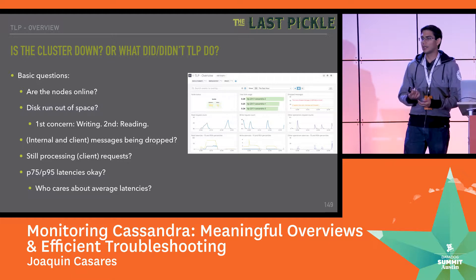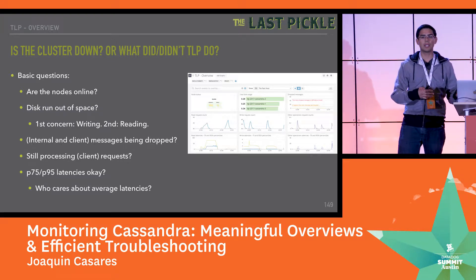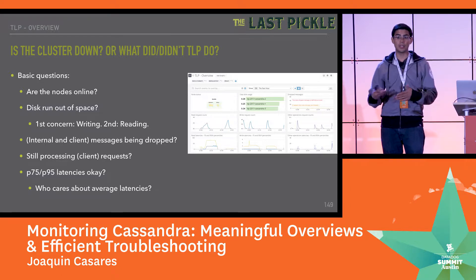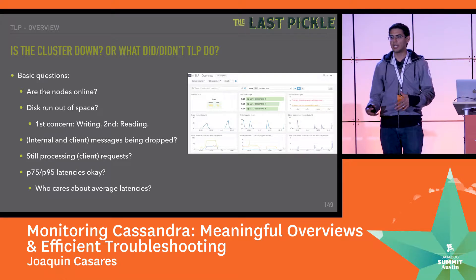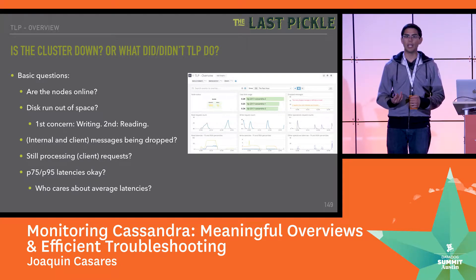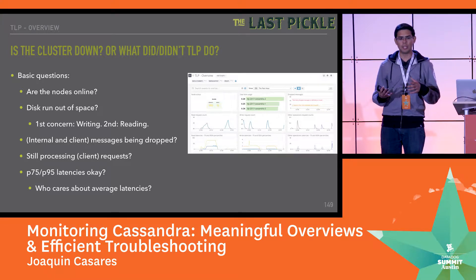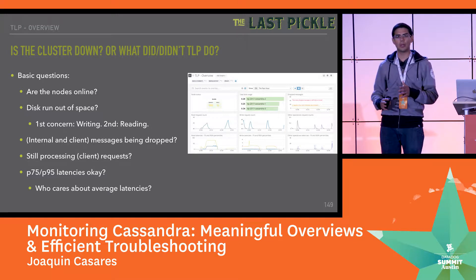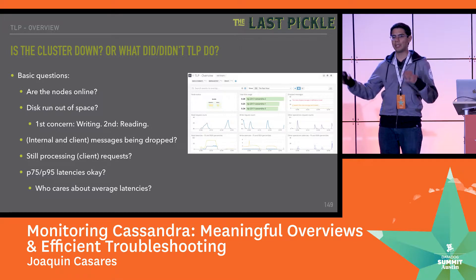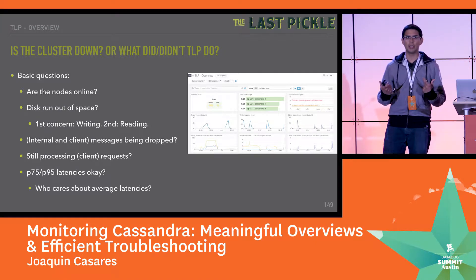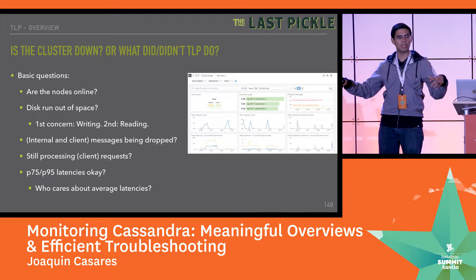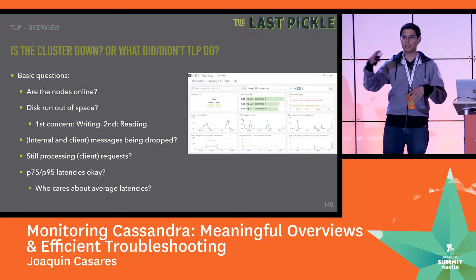We typically get customers from the application side saying something's wrong, and really what they're asking is what did we mess up. The first basic question is: are our nodes online? Per node, we generate about 4,000 metrics — P95s all the way to mins, means, and averages. Some customers have 500-node clusters across five different regions, all talking to each other, and sometimes things drop.